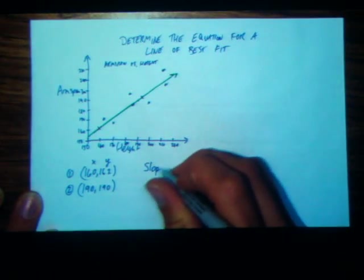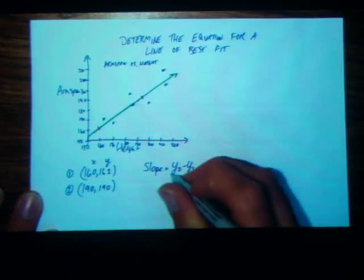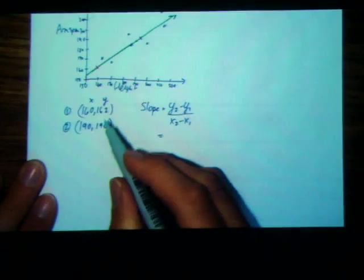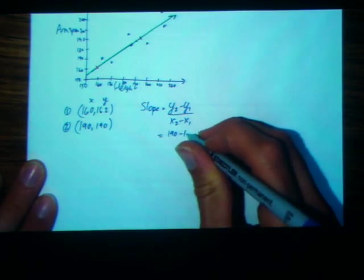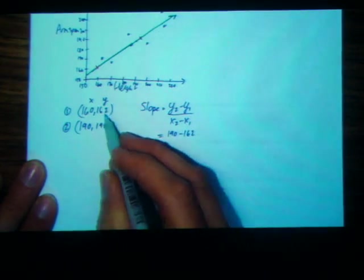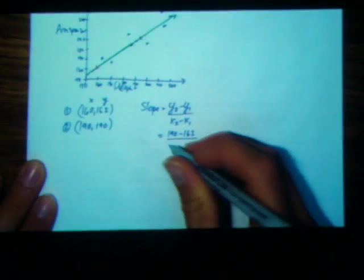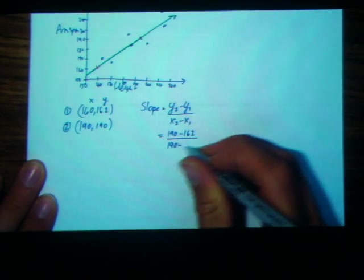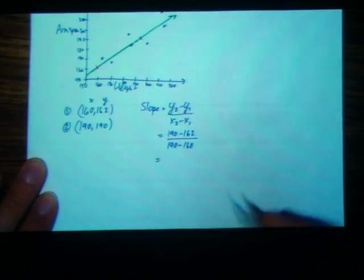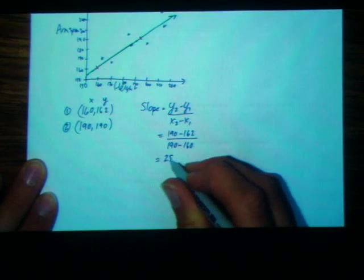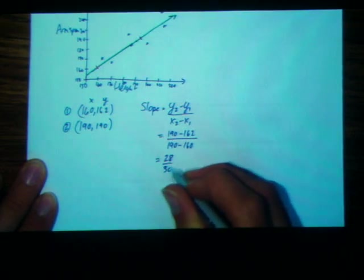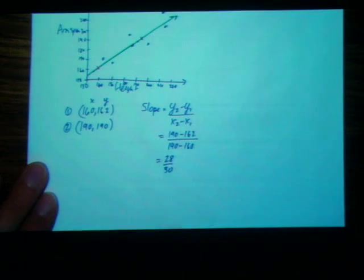Well, slope is calculated by doing y2 minus y1 over x2 minus x1. So, y2 is 190 minus y1, that's 162. I'm just doing y2 minus y1 over x2 minus x1. If you need a calculator, you can always use one. Here I'll get 28, and on the bottom I get 30. It's 28 out of 30, and that's going to be our slope.